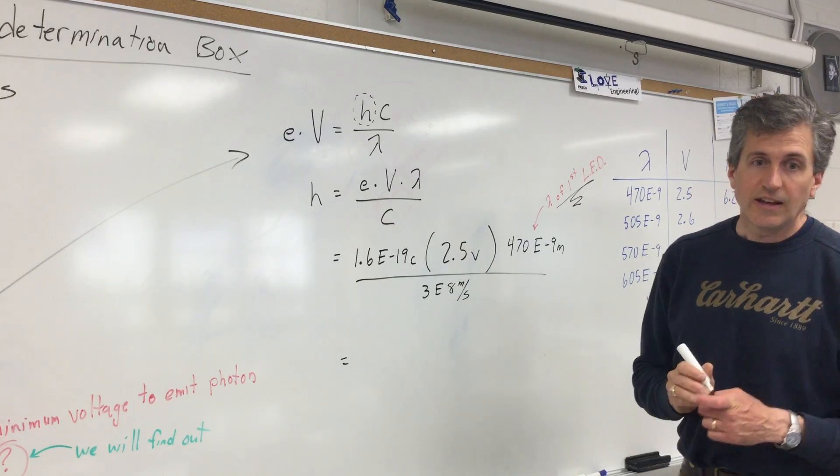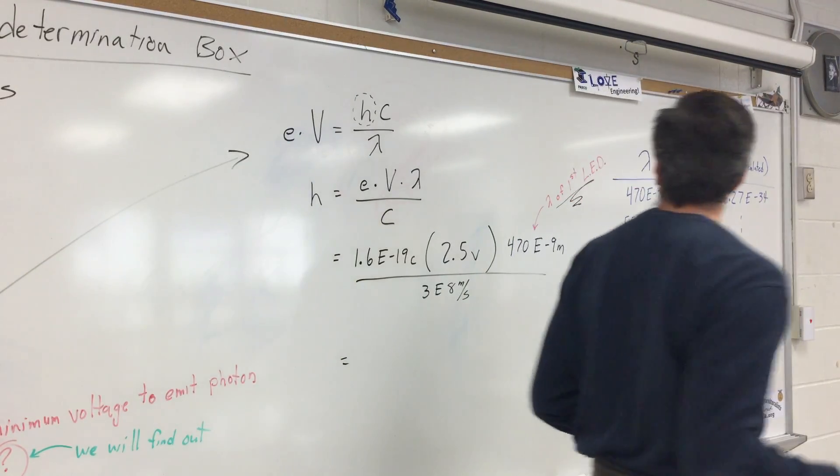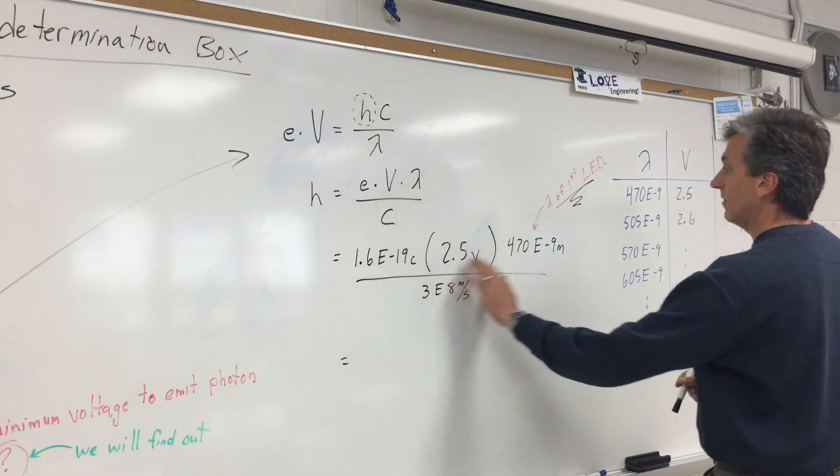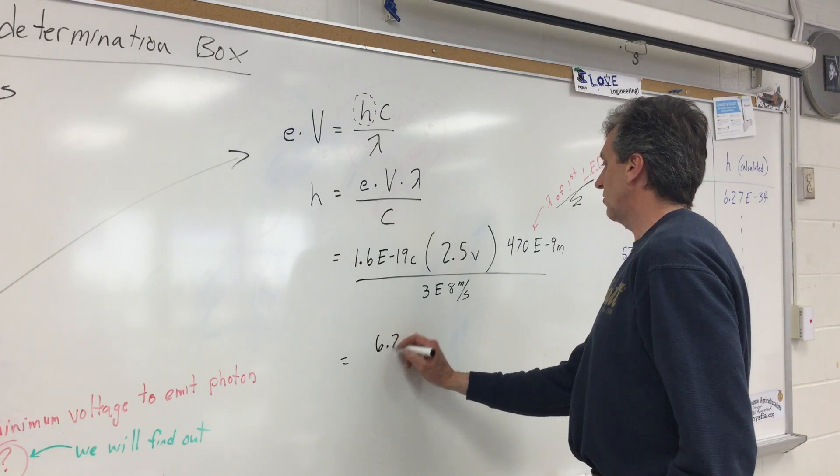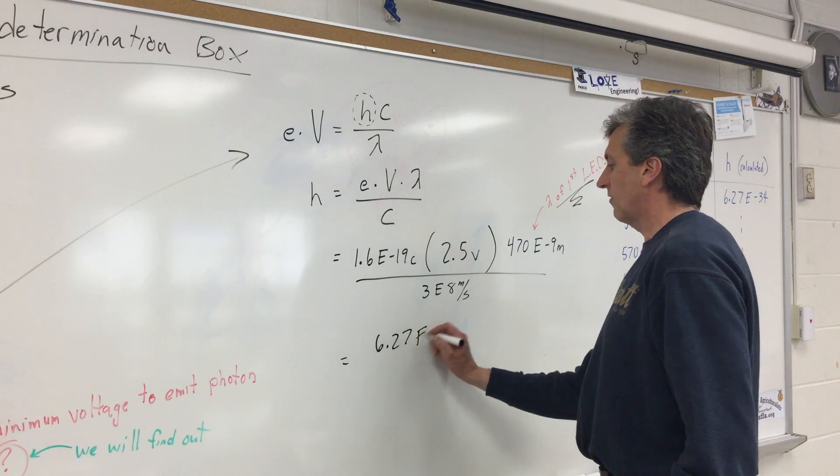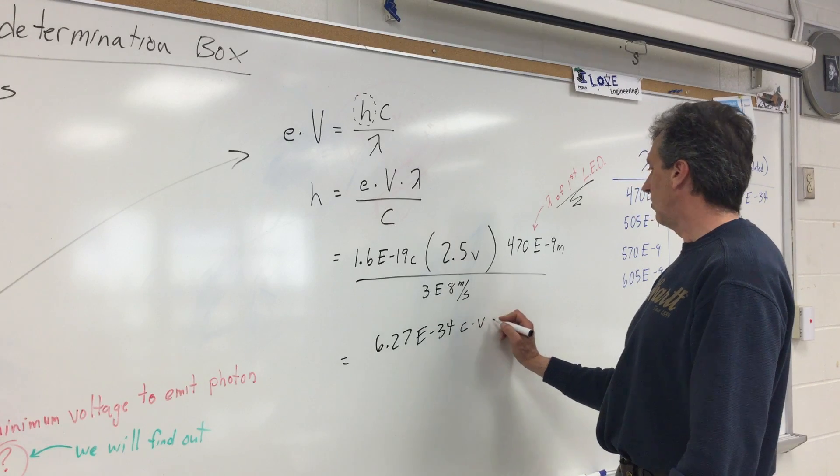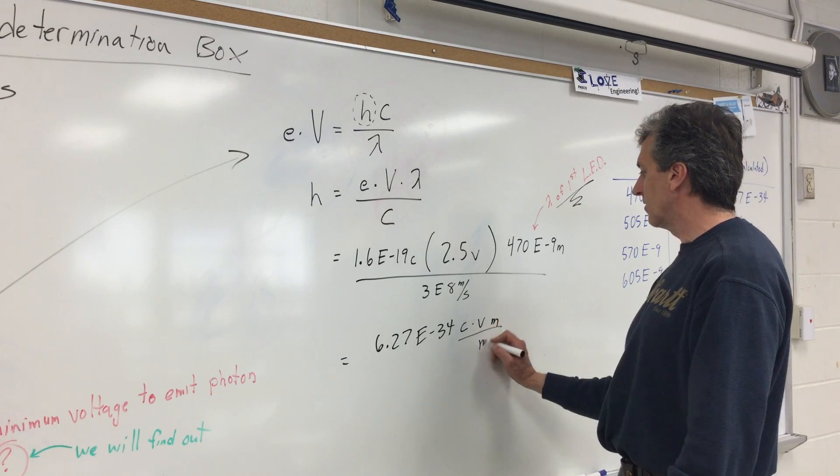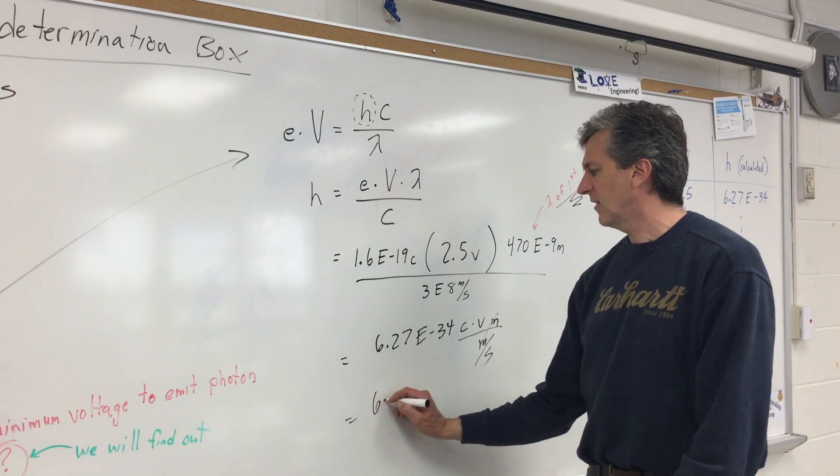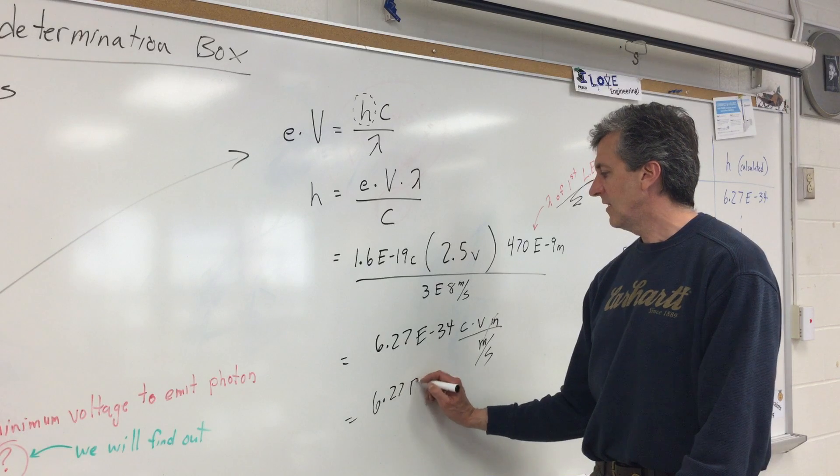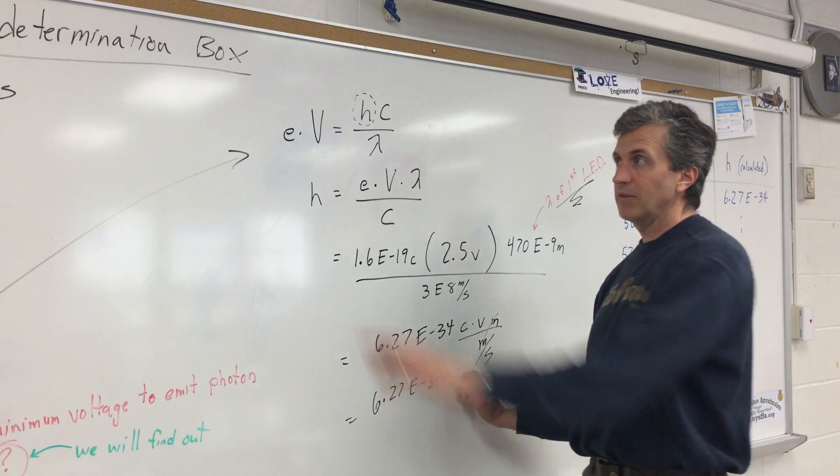So when I go ahead and take my calculator and do some calculations, which I did ahead of time, and I plug this in, this times this times this divided by this, it actually will give me 6.27 E negative 34. And that's coulombs times volts times meters over meters per second. The meters cancel. This all simplifies. It's 6.27 E negative 34 joules times seconds.